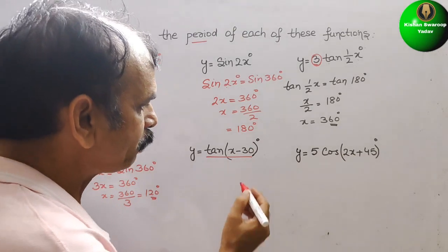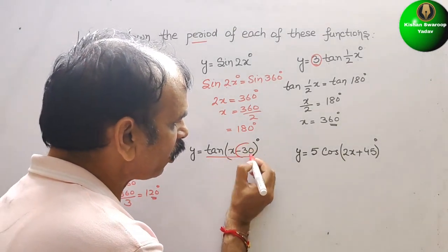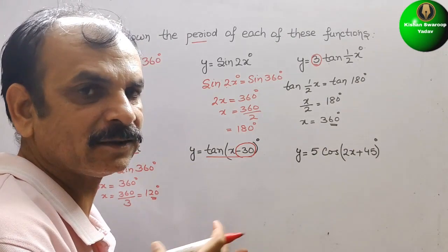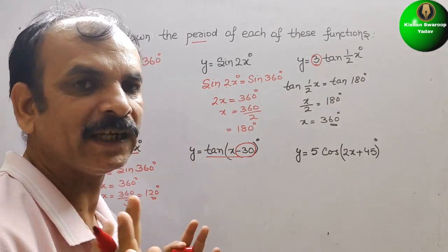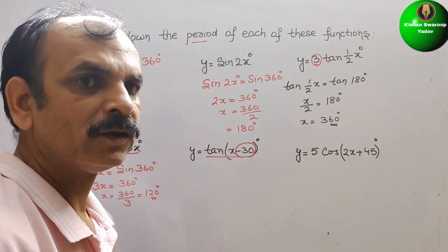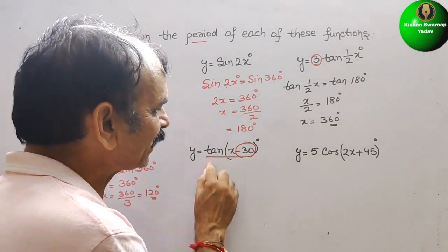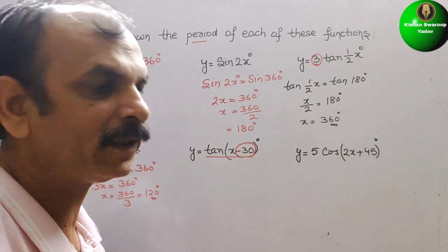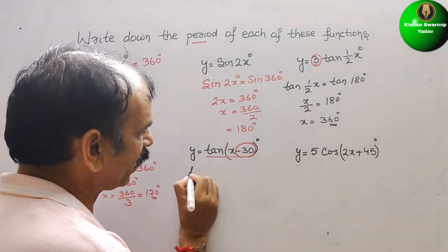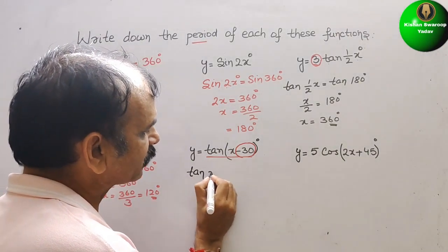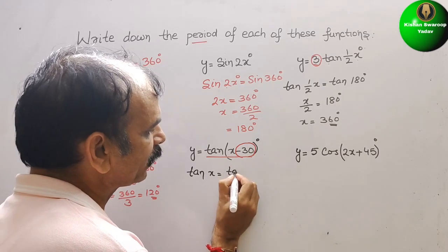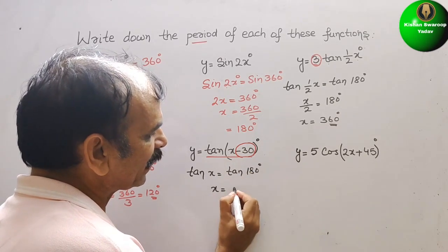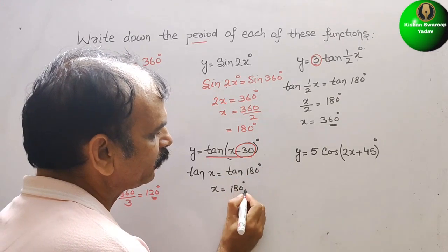Next, y = tan(x - 30) degrees. The minus 30 is just the phase shift of the wave in the x-axis, so we don't need to consider it. We only look at tan x. Since tan x completes in 180 degrees, we write tan x = tan 180 degrees, therefore the period is 180 degrees.